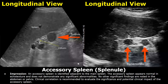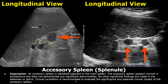Here is the impression. An accessory spleen is identified adjacent to the main spleen. The accessory spleen appears normal in echo texture and does not demonstrate any significant abnormalities. And in the end, it is important to write: clinical correlation is recommended to evaluate the significance and potential clinical impact of the accessory spleen. It is important to write about clinical correlation in the impression.